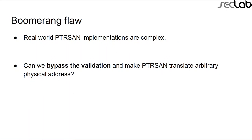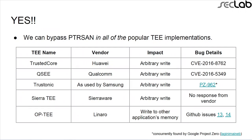The results were surprising: we could bypass all PTRSAN implementations in all popular TEE implementations. As you can see, the impact is significant — we could get arbitrary write on almost all platforms, except for OP-TEE, where only user applications can interact with other user applications, due to the memory model they use.